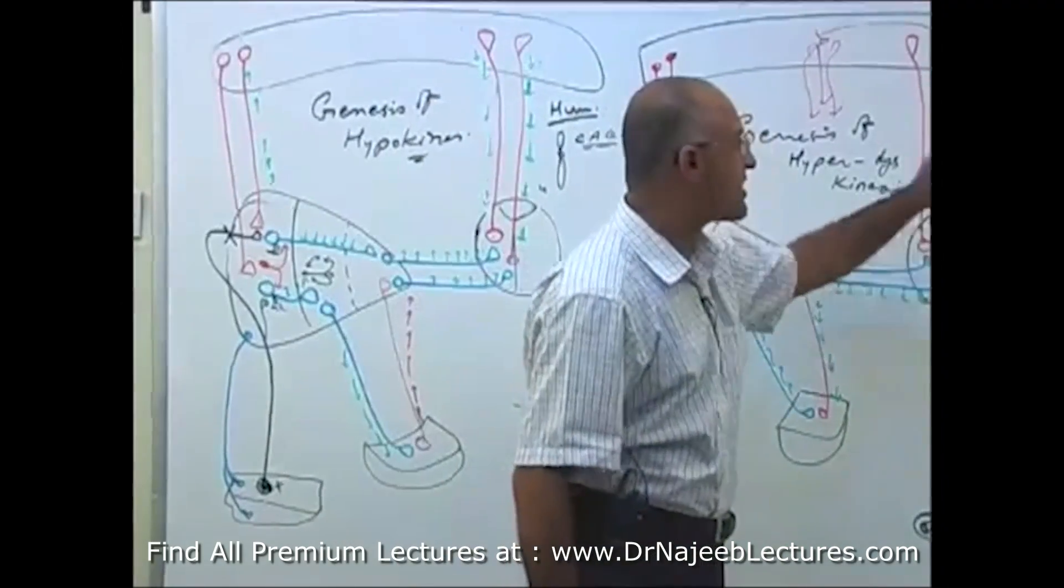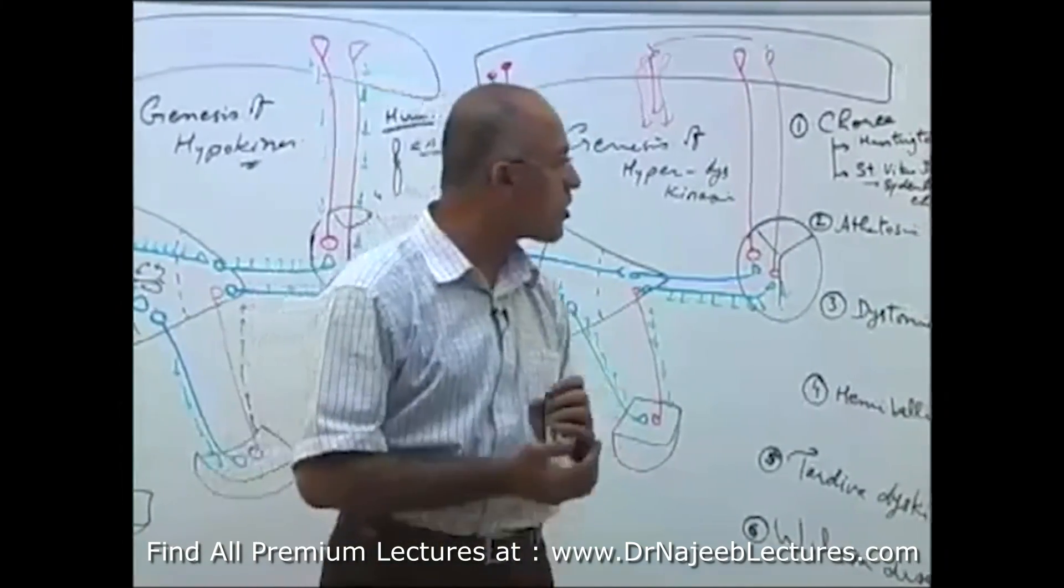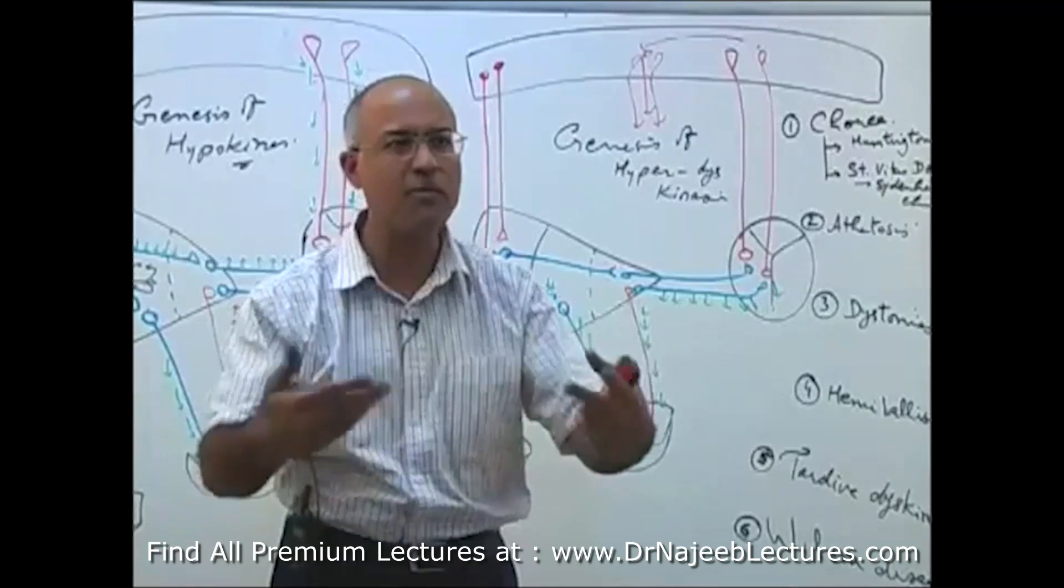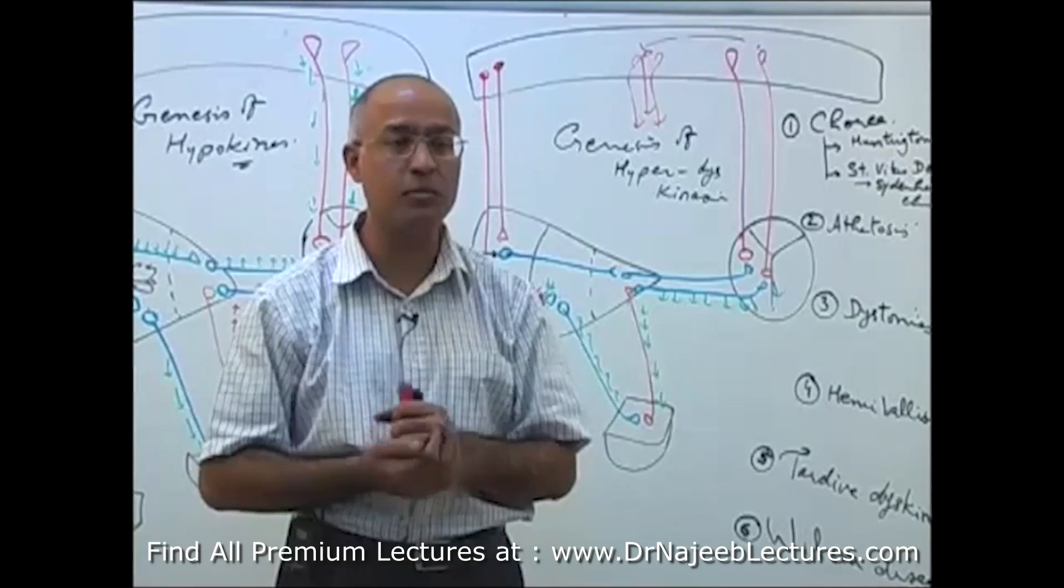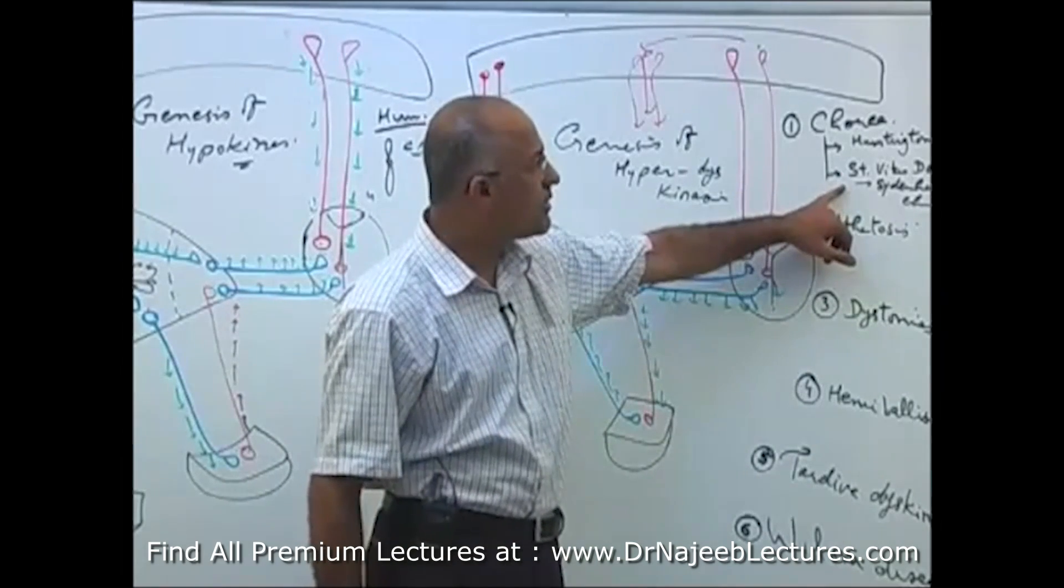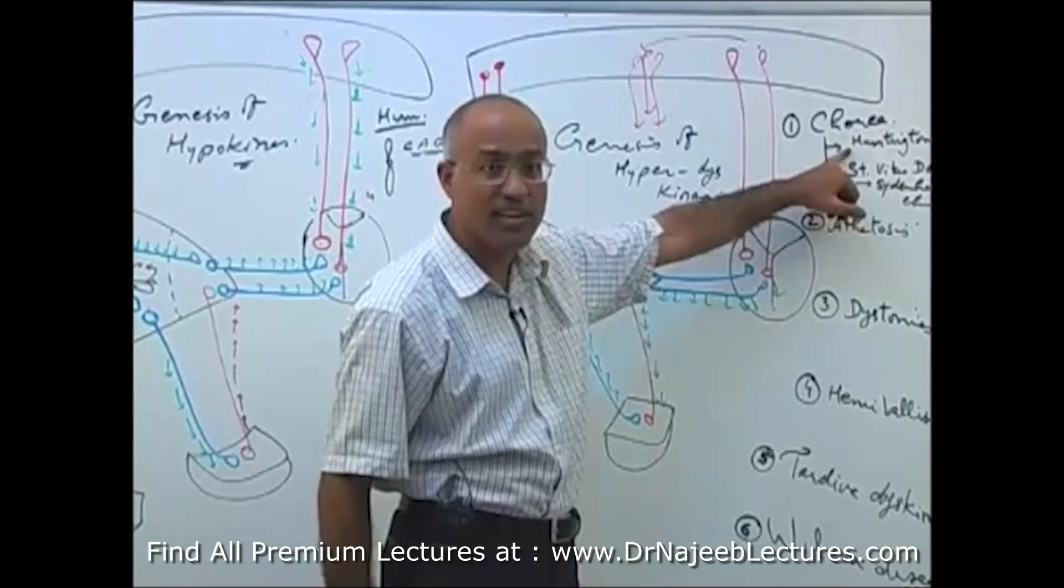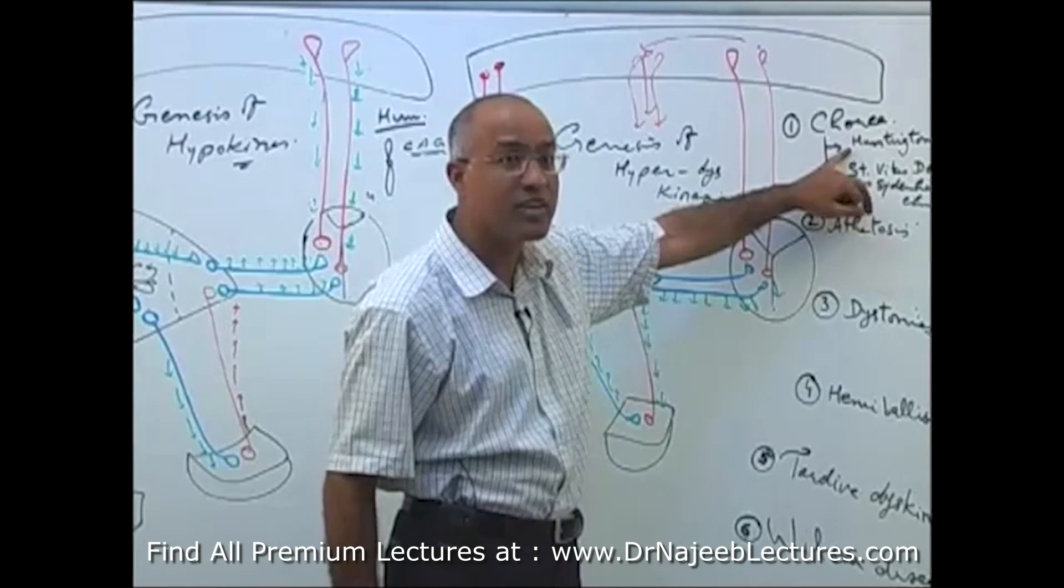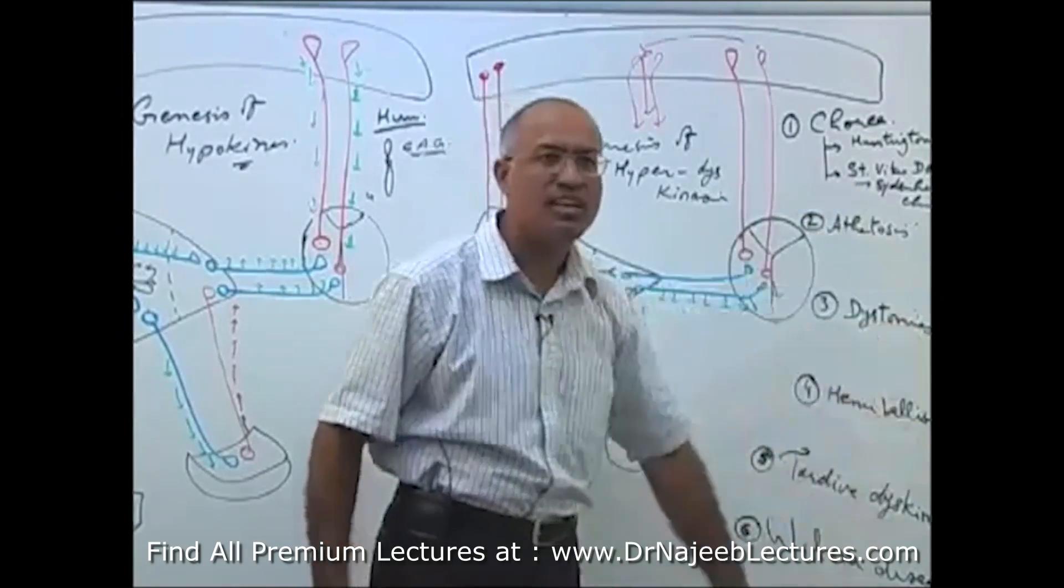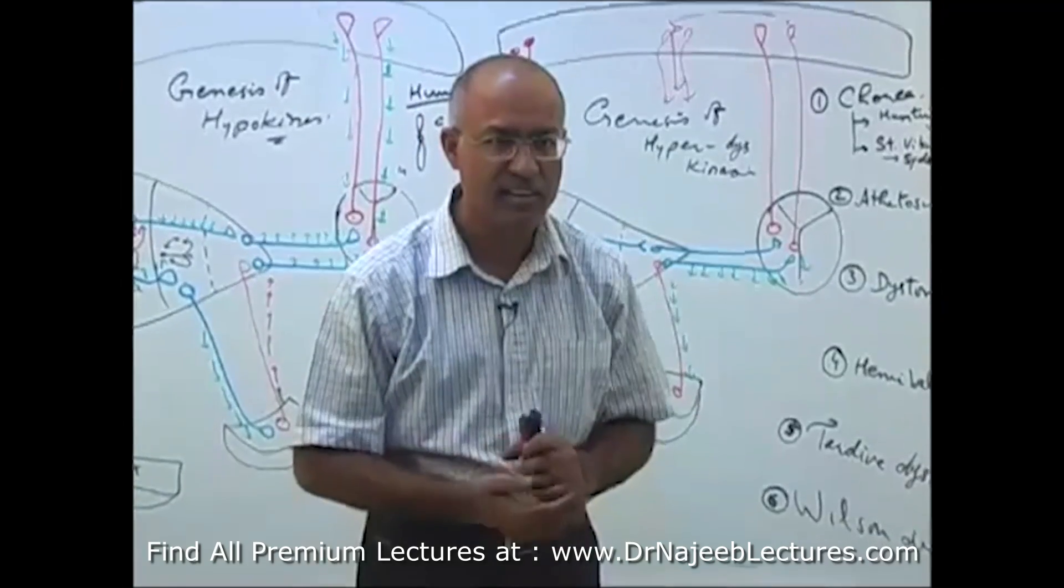Then there is St. Vitus dance, or other name is, Sydenham's chorea. This type of problem is more common in girls, and this is another type of chorea. Purposeless, sudden, brisk, uncontrollable movement. If you really want to have chorea, try to get this one, not the other one. Huntington's, if it once start, it is progressive. St. Vitus dance, or Sydenham's chorea, is transient chorea. It occurs in the patient with rheumatic fever.